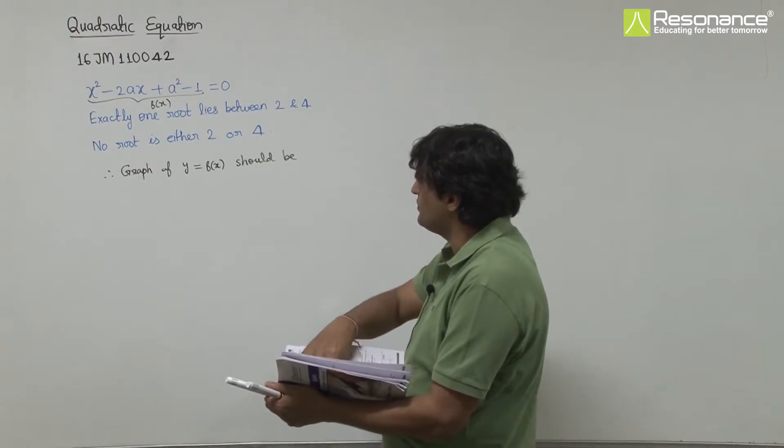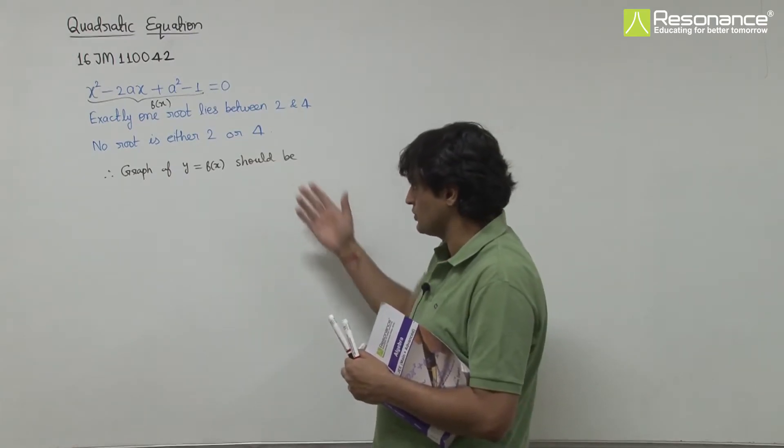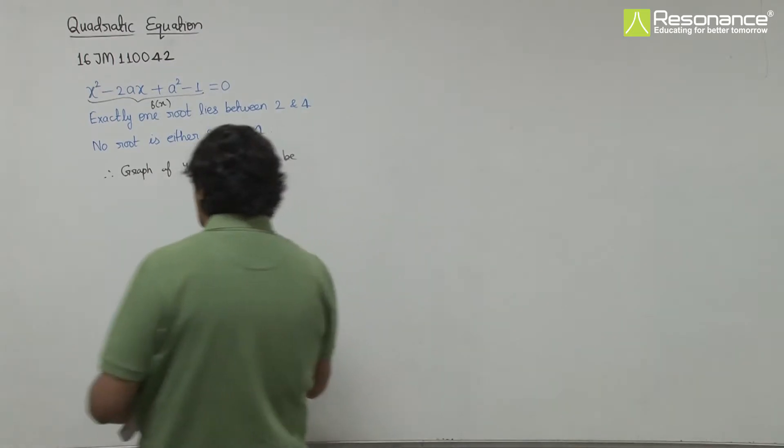Between 2 and 4, it should cross once. Since it's quadratic, it crosses twice total, so the second root will be either before 2 or after 4. The graph should be like this.